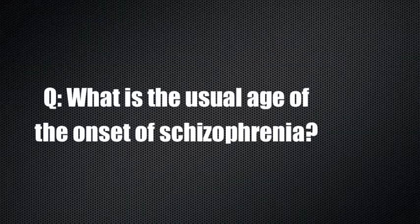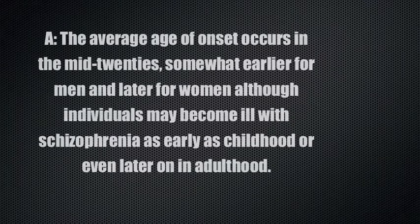What is the usual age of onset of schizophrenia? The average age of onset occurs in the mid-20s, somewhat earlier for men and later for women, although individuals may become ill with schizophrenia as early as childhood or even later on in adulthood.